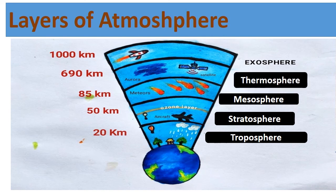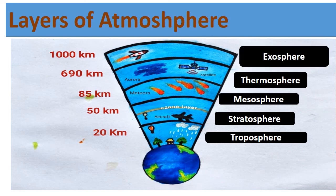The fourth layer is the Thermosphere. Space shuttles move about in this layer. The fifth layer is the Exosphere.